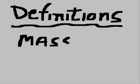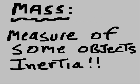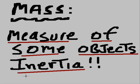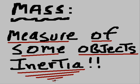First thing we want to talk about are definitions. The first definition we want to discuss is that of mass. What is mass? Mass is a measure of some object's inertia.